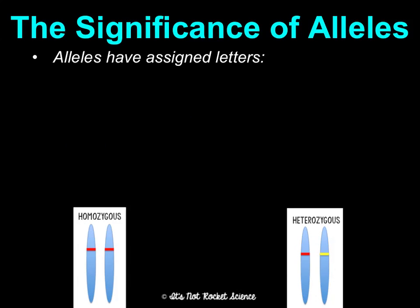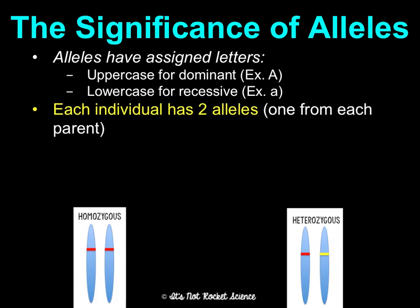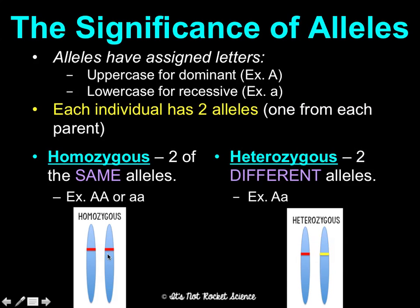Alleles have assigned letters: uppercase for dominant, lowercase for recessive. Each individual has two alleles, one from each parent. If you get the same alleles from both parents — two dominant or two recessive — we say the genotype is homozygous. If you get different alleles — a dominant and a recessive — we say the genotype is heterozygous. Hetero means different, homo means same.